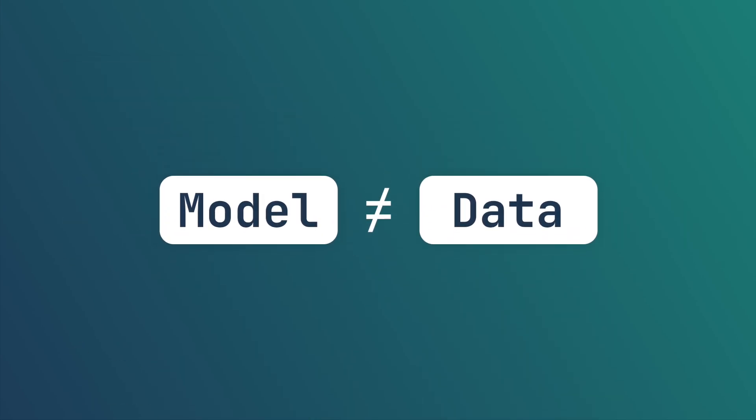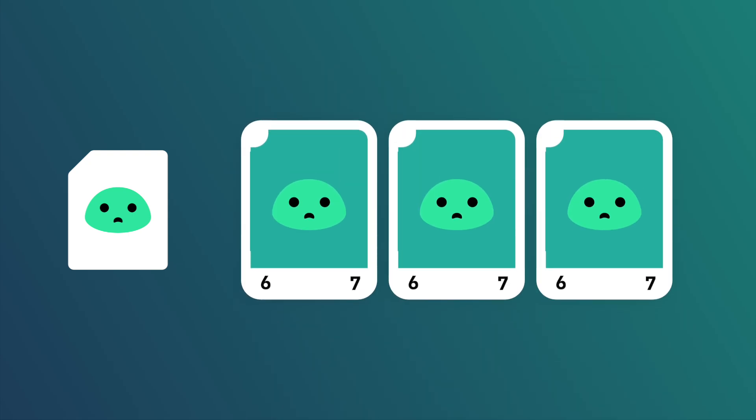While the model and the data seem similar, there are a few differences. Each card will only have one data, but with this data multiple card objects can be created. For example, from one slime card data we could create the slime card three times. And while they all have the same stats in the beginning, the stats of one slime could be changed during play.